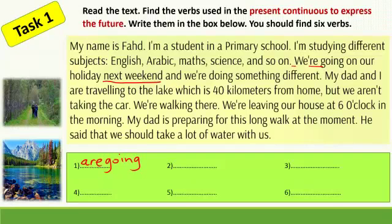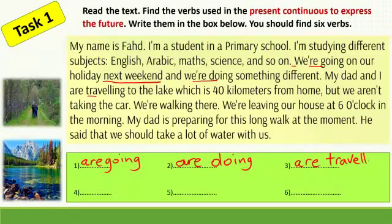Carry on: 'And we are doing something different.' 'We are doing' — that is verb number two: are doing. Let's carry on: 'My dad and I are traveling to the lake, which is 40 kilometers from home.' 'Are traveling' is also for the future — present continuous to express the future. But: 'We aren't taking the car.' That is negative — 'aren't taking' — verb number four.